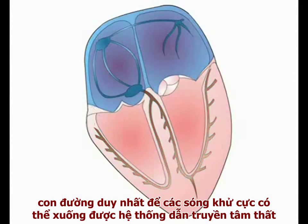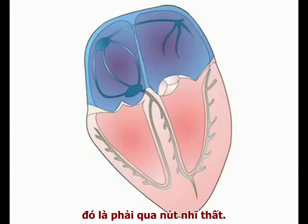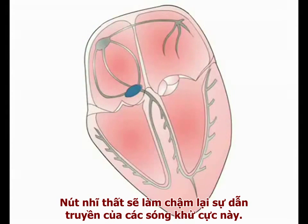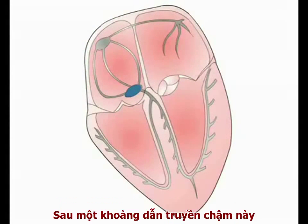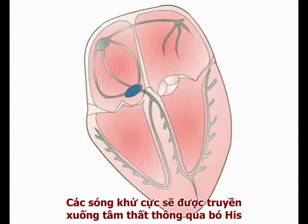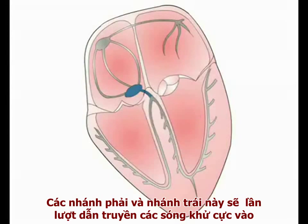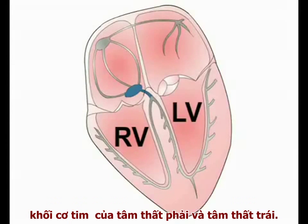In a normal heart, the only route by which the depolarizing wave can enter the ventricular conducting system is through the AV node. In order to allow the ventricles to fill with blood following atrial contraction, the AV node initially delays the spread of the depolarization wave. And after this short delay, the depolarizing signal is transmitted into the ventricles via the bundle of Hiss. The bundle of Hiss lies in the interventricular septum and divides into right and left bundle branches, which transmit the depolarizing signal into the muscle mass of the right and left ventricles, respectively.